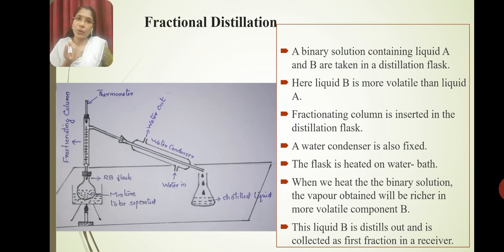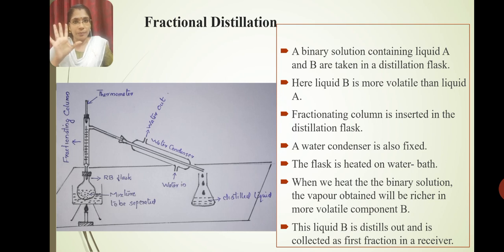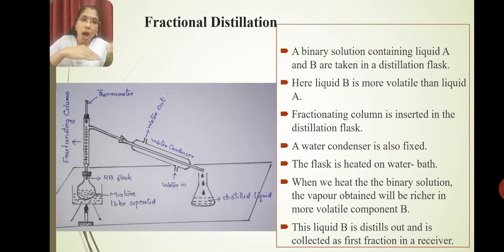The more volatile liquid B goes up as vapor. Liquid B evaporates, the vapor goes up, and liquid B distills out and is collected as the first fraction in the receiver.